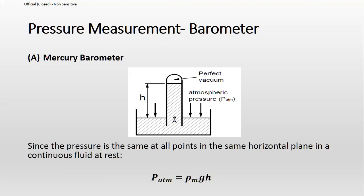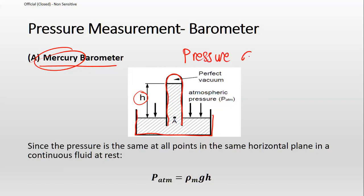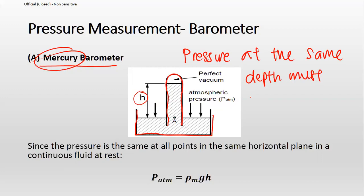For pressure measurement devices, the first is the mercury barometer. The setup is simple: we have a basin and an inverted test tube filled with mercury. As we invert the tube, the mercury rises up to a level H. Using the key concept that pressure at the same depth must have the same value, we can equate pressures at the same level.